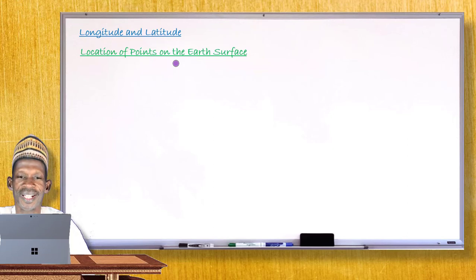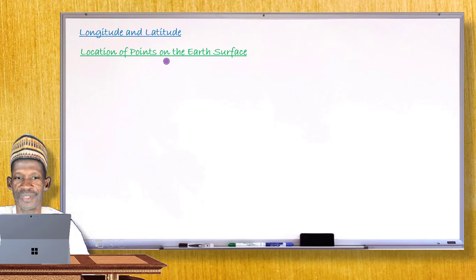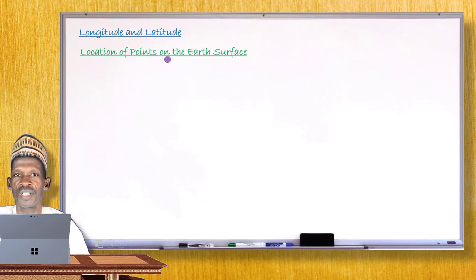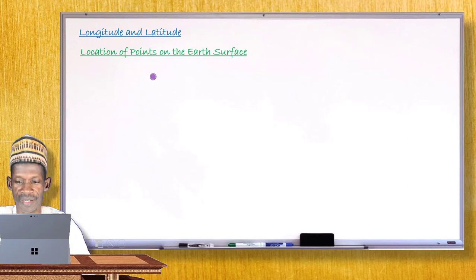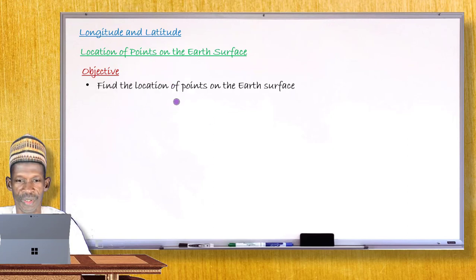Hello, my dear student. Welcome to another edition of your mathematics lesson. Today we're going to take another new topic: longitude and latitude. What you are going to learn first under this main topic is how to write or find the locations or points on the earth's surface. After completing this lesson, you will be able to find the location of points on the earth's surface.